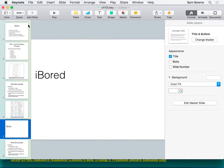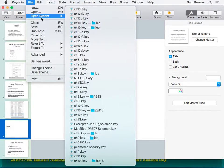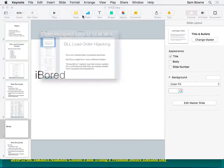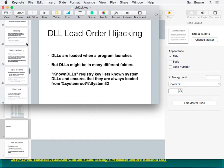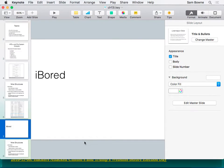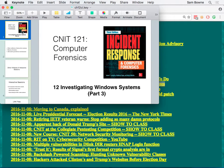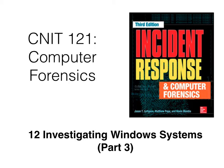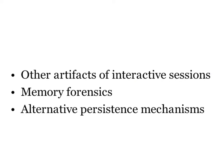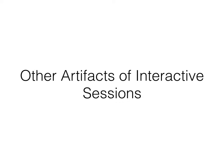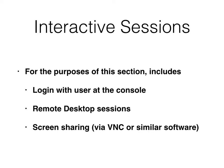Today we're going to finish up Windows. I was going to start the Mac dissection but Windows is big enough to use up the time. Here are the last three topics of Windows to cover — it took three whole lectures because it's the most important OS for investigations. We'll talk about other artifacts, memory forensics, and alternative resistance mechanisms.